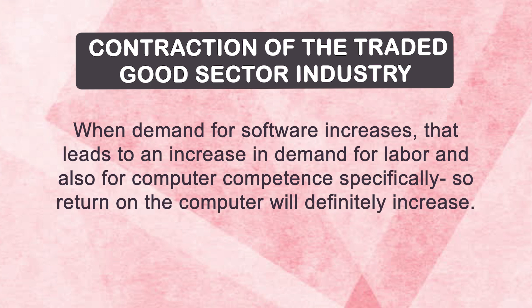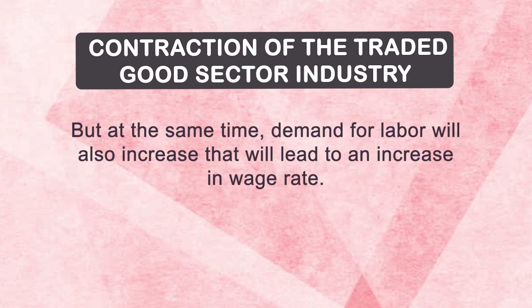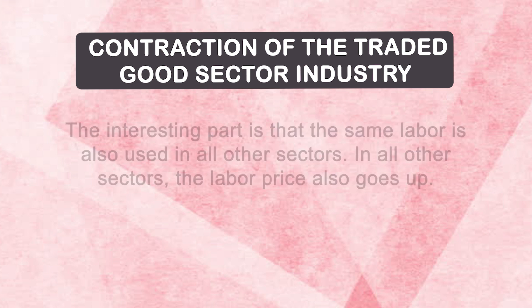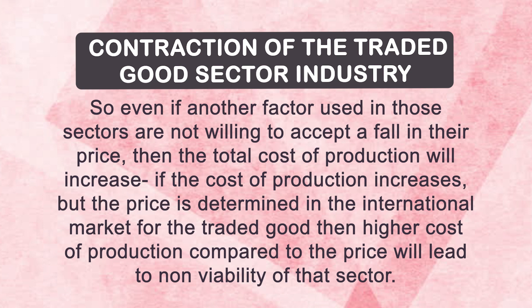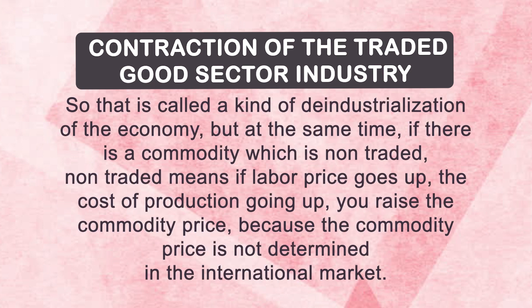When one sector emerges in the economy — like natural gas, or say software — and there is huge demand for that product, people will try to produce more. That needs labour and capital. The same labour is also used in producing cars, rice, and medical equipment. When demand for software increases, it leads to an increase in demand for labour, raising the wage rate. Since the same labour is used in all other sectors, labour price goes up across those sectors too. If another factor in those sectors is not willing to accept a fall in their price, total cost of production will increase.